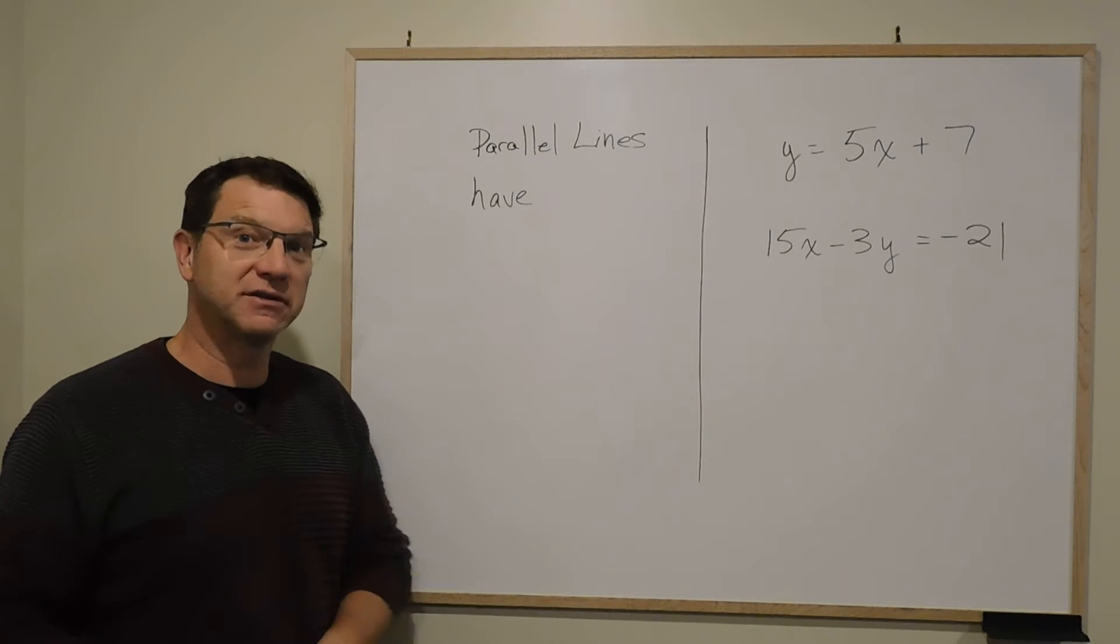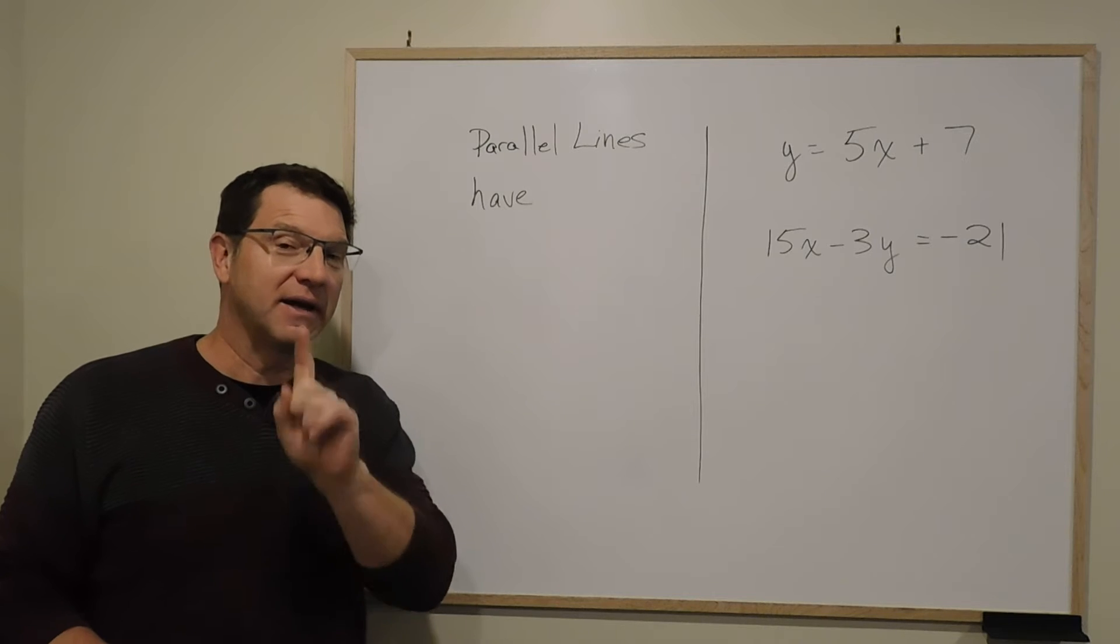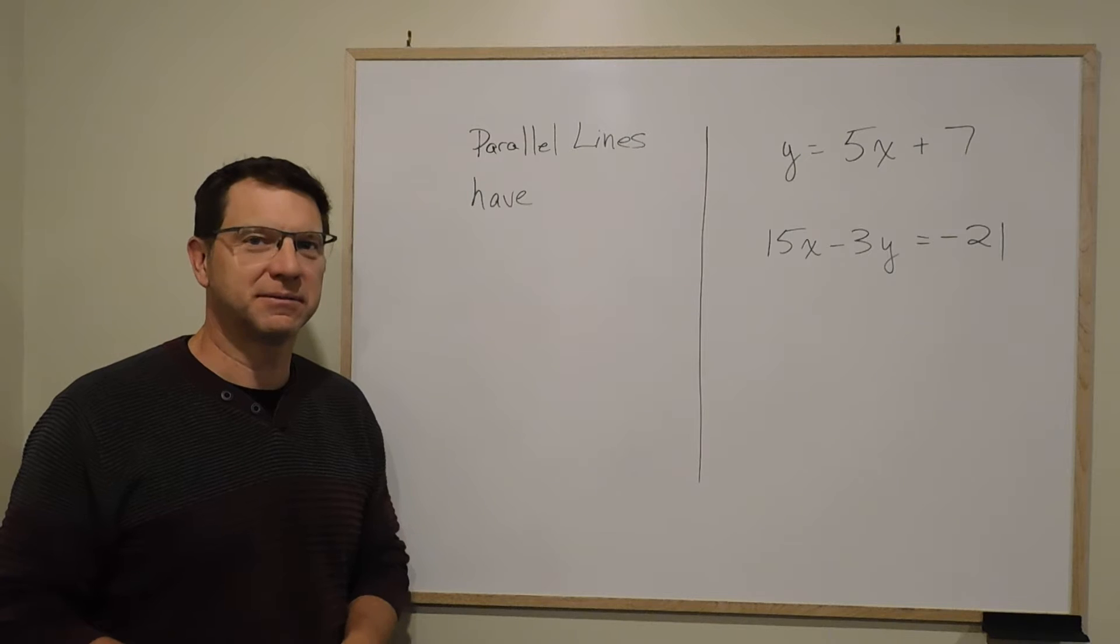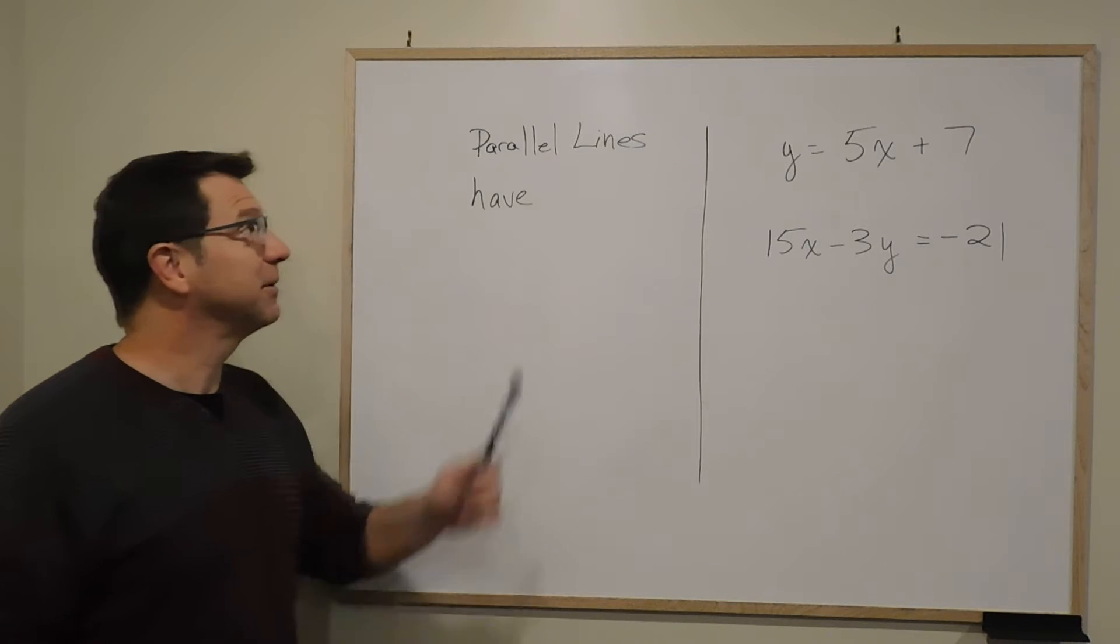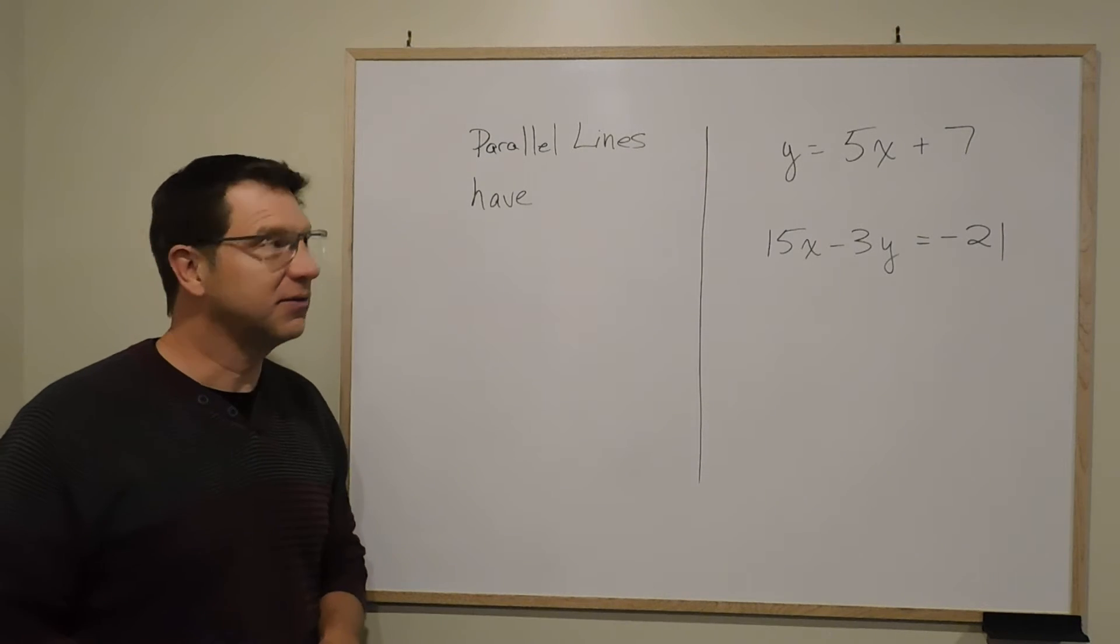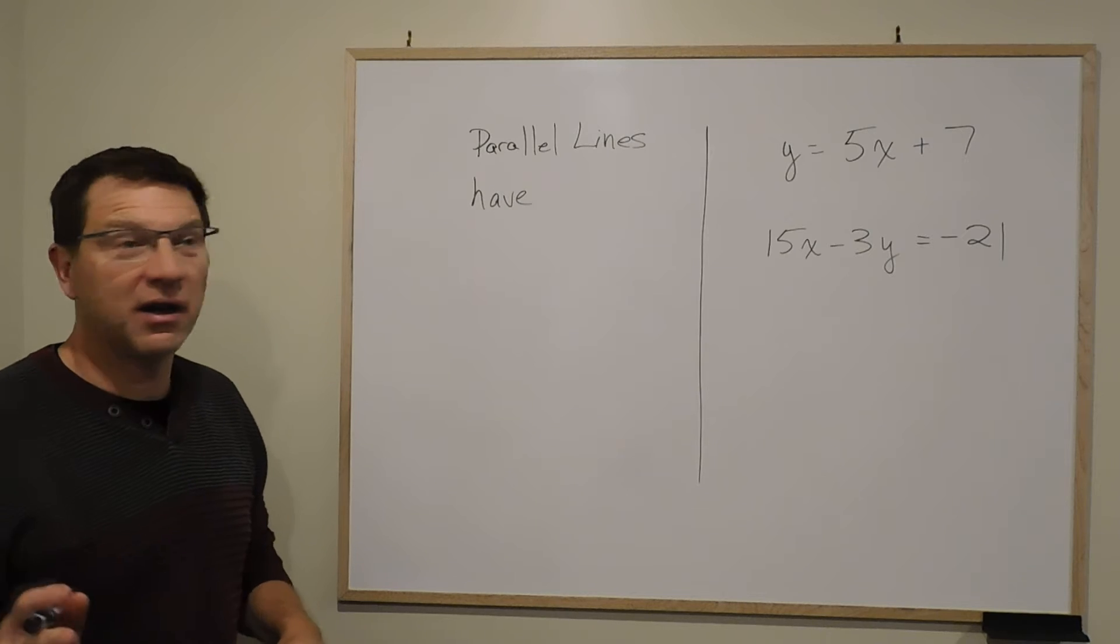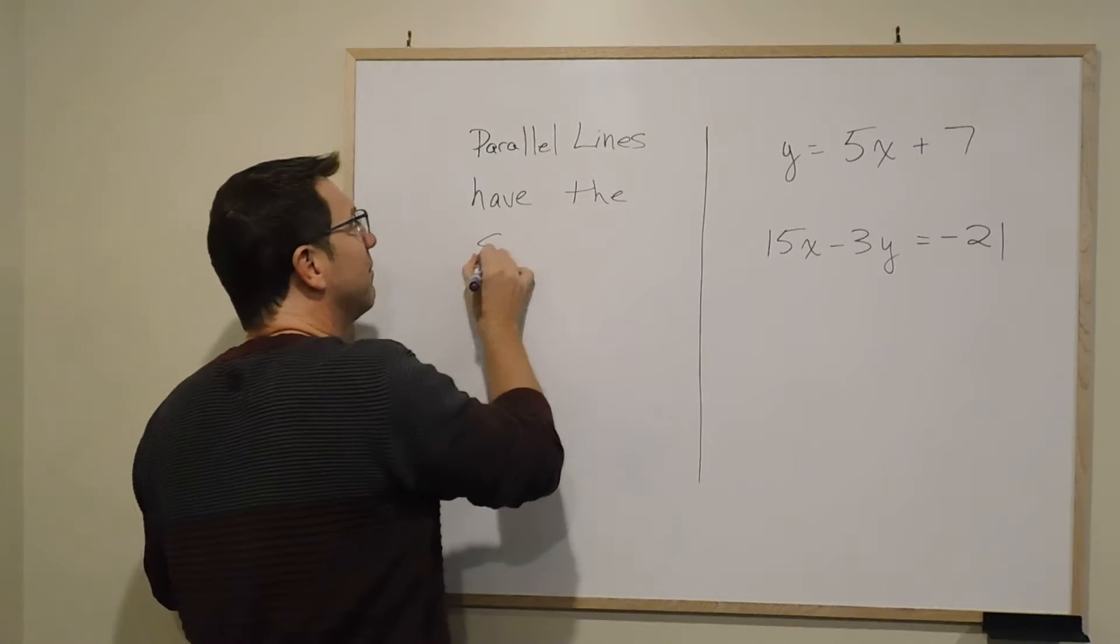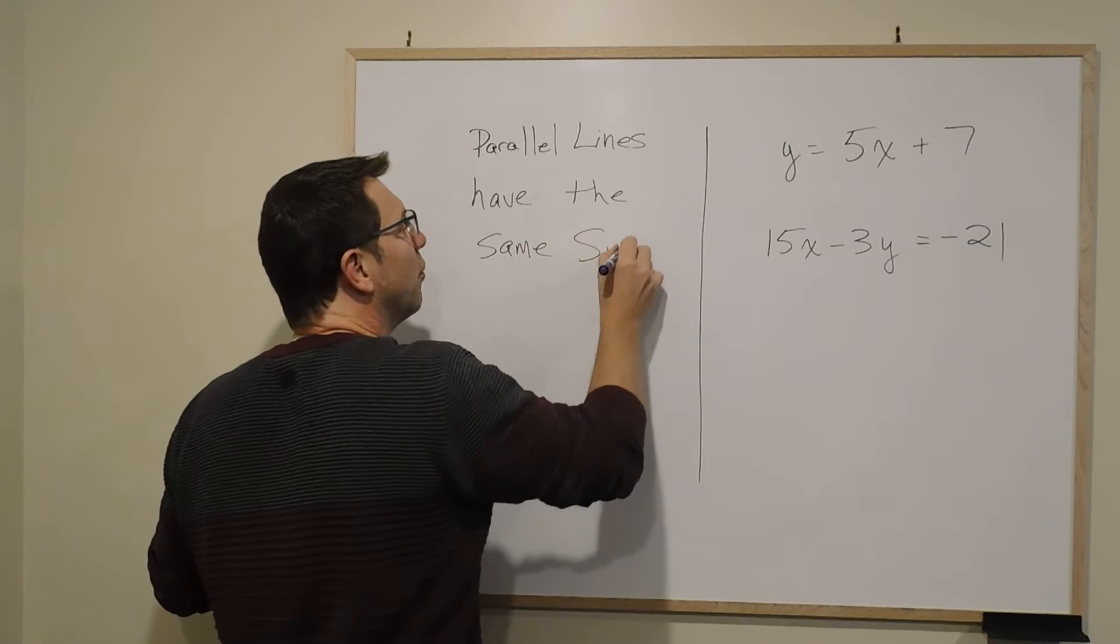If you have two lines that cross, you get one intersection point and that intersection point is the solution. Now there are a couple other possibilities. One is when you have parallel lines. You'll know they're parallel because parallel lines have the same slope.